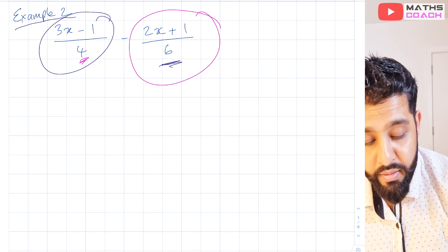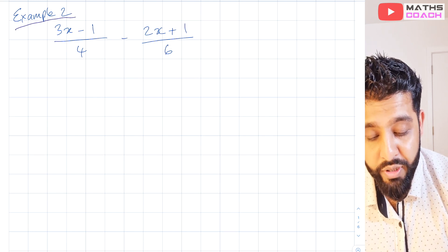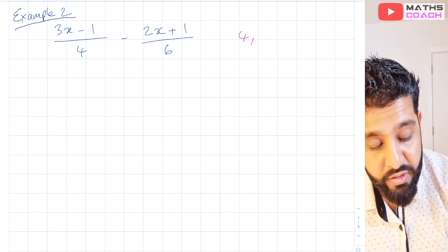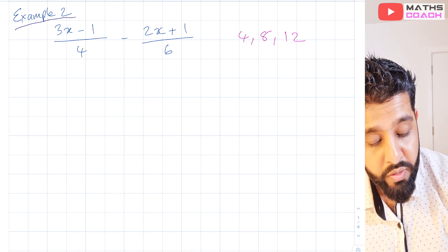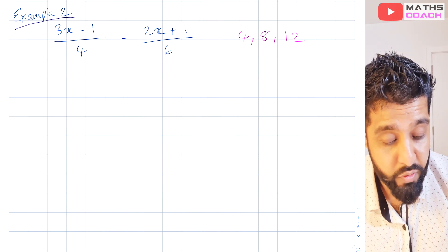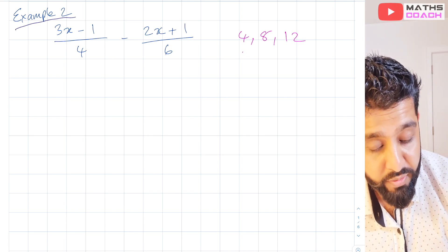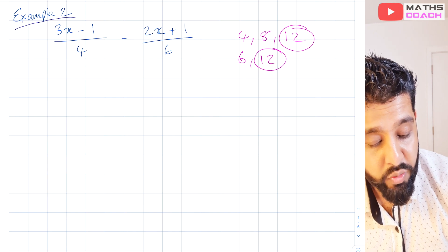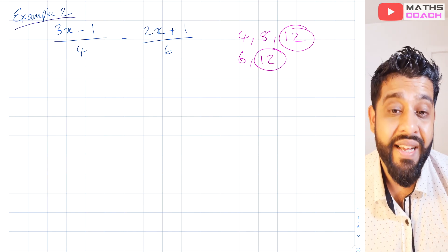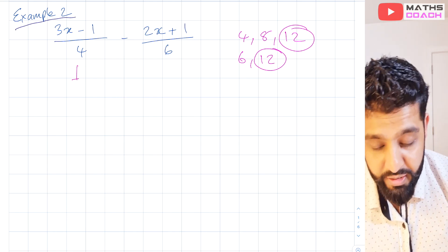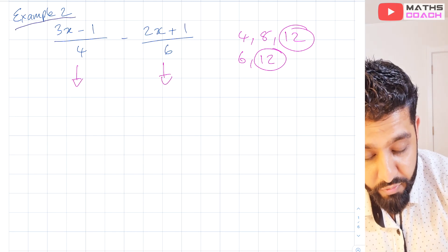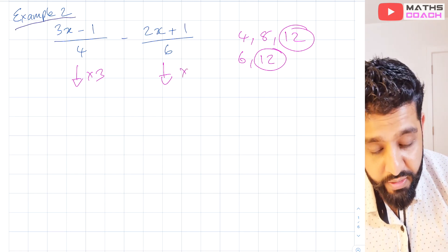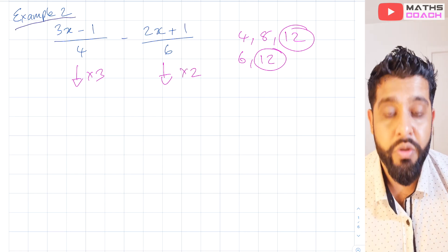I want to give you another way of doing this. The lowest common multiple of 4 and 6 is 12 — 4, 8, 12, and 6, 12. So how do you achieve 12 for both? You multiply 4 by 3 to get 12, and multiply 6 by 2 to get 12.